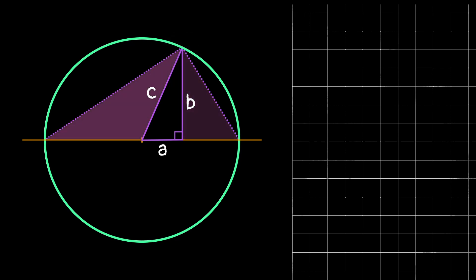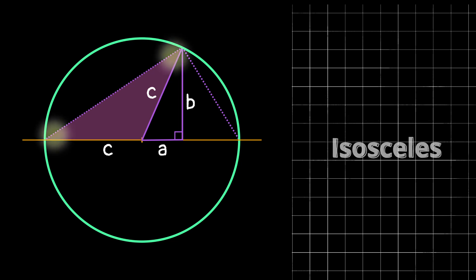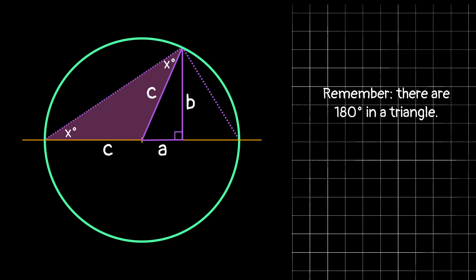We notice on this left triangle, it has two sides that are the length of the radius, or length C, which makes it an isosceles triangle. So then we know these two angles will have the same measure, which we can just call x. And if we know the measures of two angles in our triangle, we can find the third by subtracting them from 180, so this angle will have the measure 180 minus 2x.